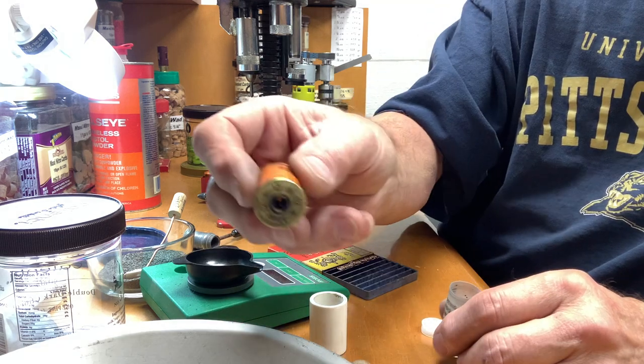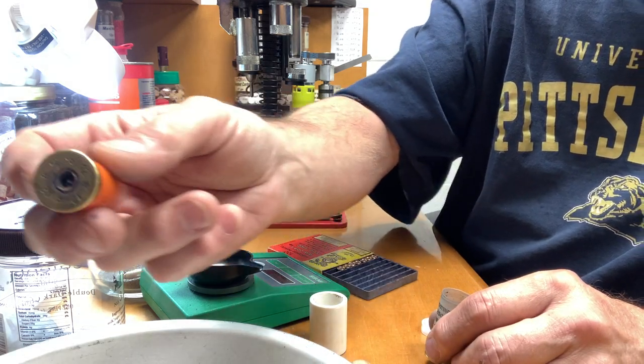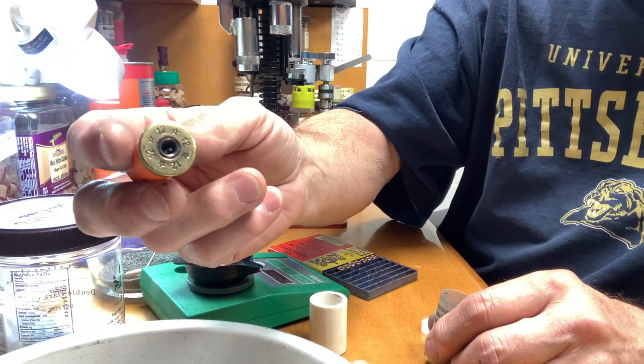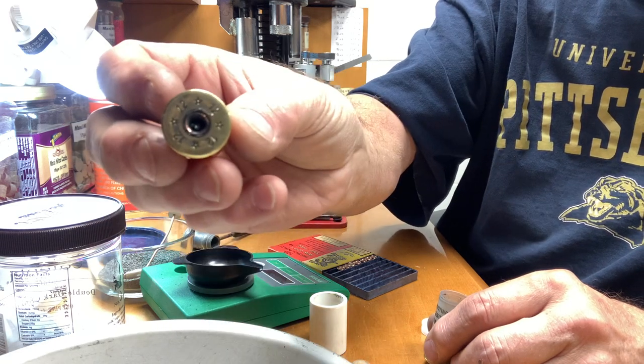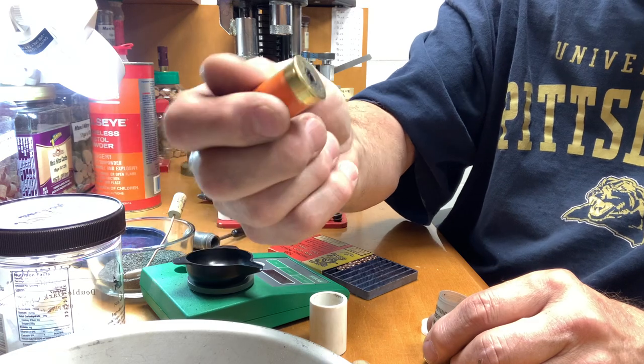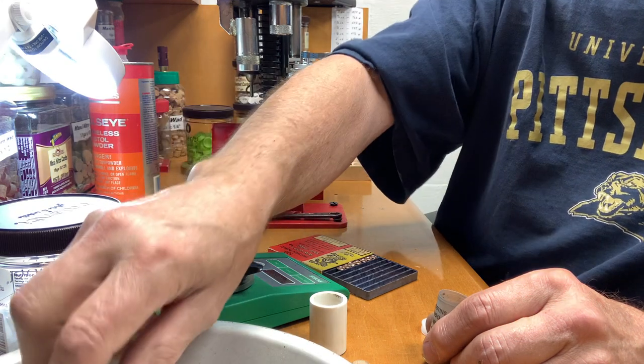But then after I picked all of them up, some of them look like this. As you can see, the whole center of the primer was blowed out, you can actually see the anvil in there. They were over pressure.